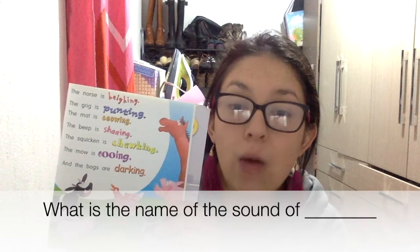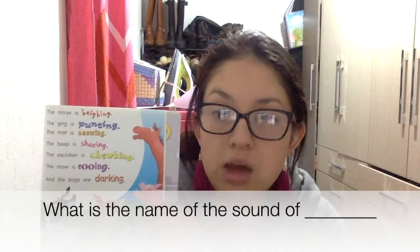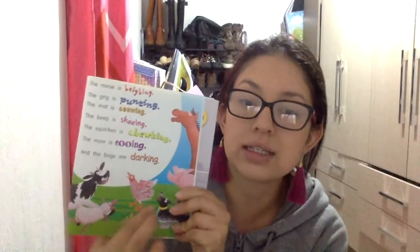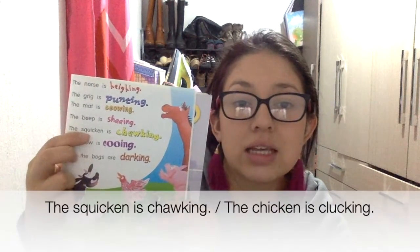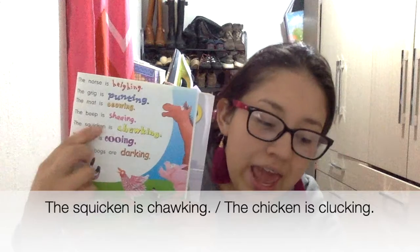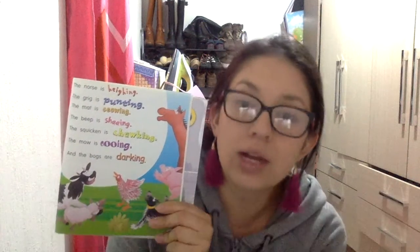First you need to go on Google and put what is the name of the animal sound. Aquí se los voy a dejar escrito. Y van a poner el nombre de los animales que están acá para ver cuál se parece a esto. Yo les voy a decir la que más me costó — creo que probablemente sea el que más les va a costar a ustedes porque sí está un poquito complicado. Entonces, el que más me costó a mí es 'the squeaking is choking,' y esta es 'the chicken is clucking.'